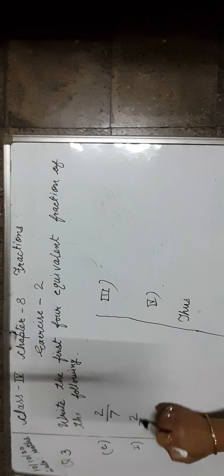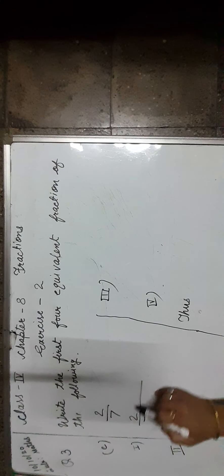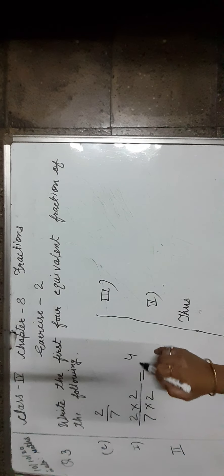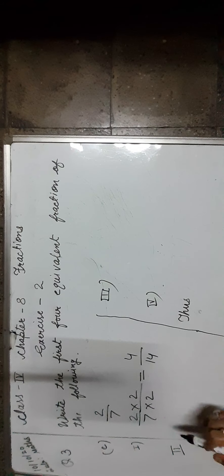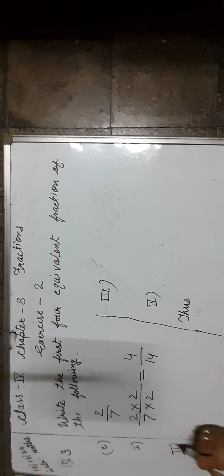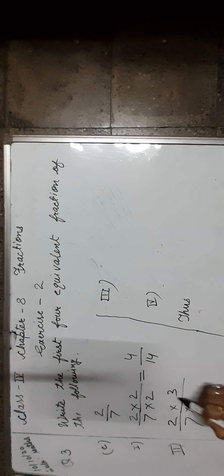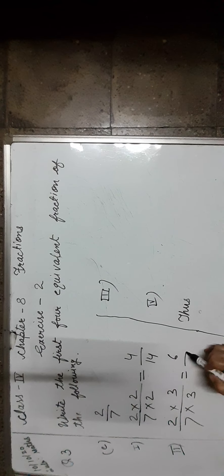Let us find the equivalent fractions of 2 upon 7. First, we multiply both numerator and denominator by 2, which is equal to 4 upon 14. For the second equivalent fraction, we multiply both numerator and denominator by 3, which is equal to 6 upon 21.